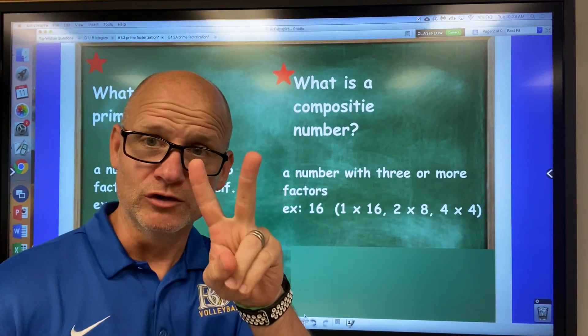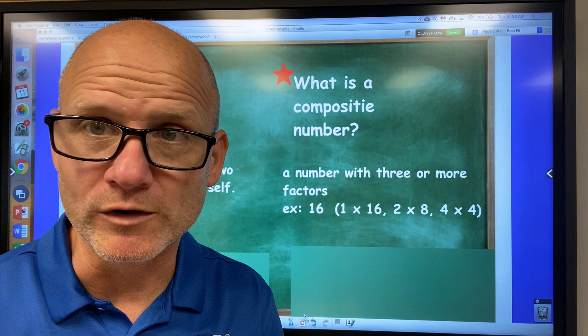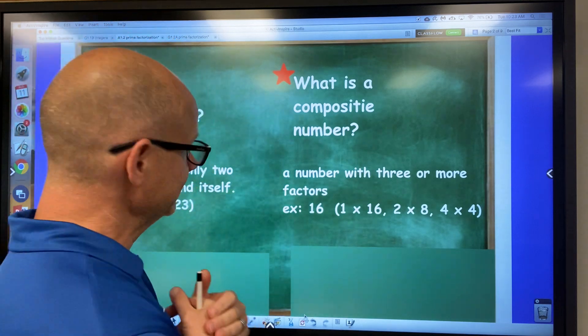So prime numbers, only two factors. Composite numbers, more than two factors. Okay, so let's move on.